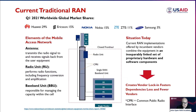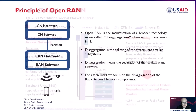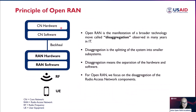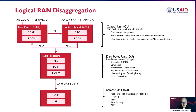The principle of Open RAN involves opening the core network hardware and software, similar to what already happened in the IT world. This is part of a broader technology movement called disaggregation. In the IT world, disaggregation already happened many years ago. Disaggregation in RAN means splitting the system into smaller subsystems and separating hardware from software — for example, separating the CU, DU, and RU, and assigning protocols to each corresponding hardware.